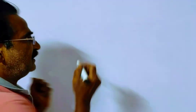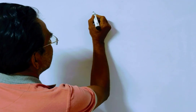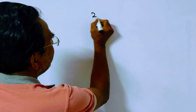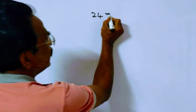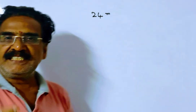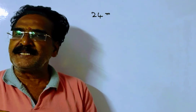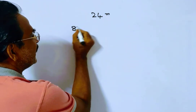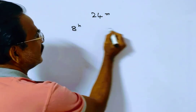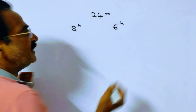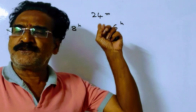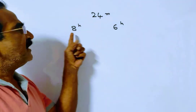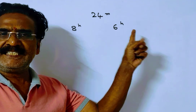Say the length of each candle is 24 meters. The first candle is consumed in 8 hours and the second candle is consumed in 6 hours. This 24 is the LCM of 8 and 6.